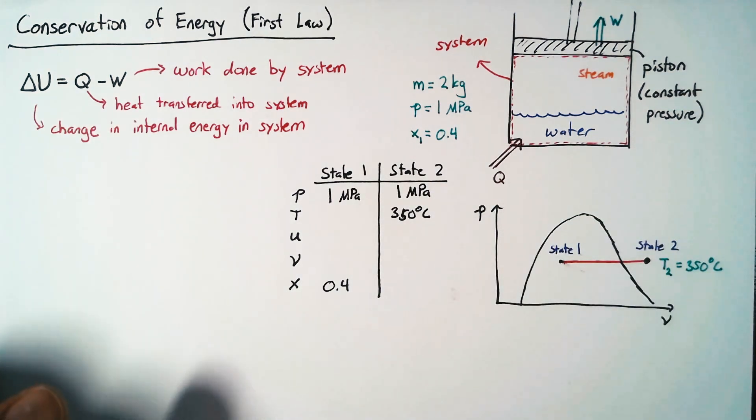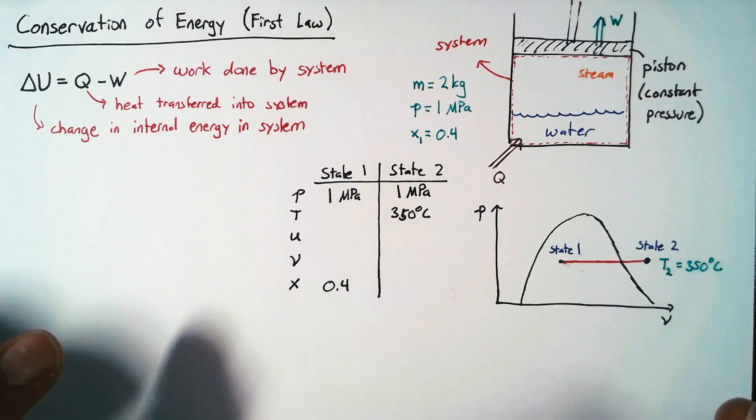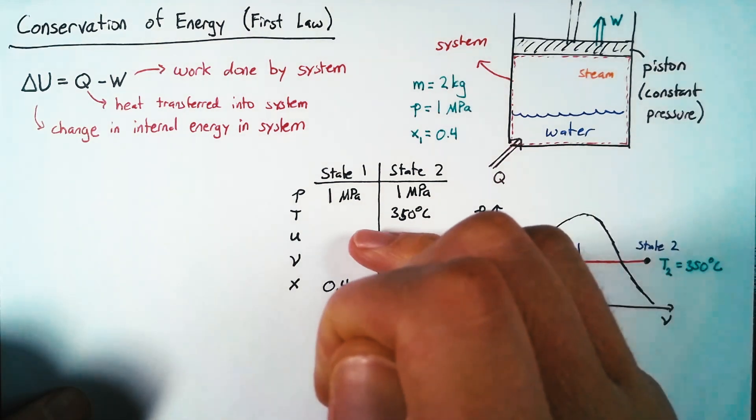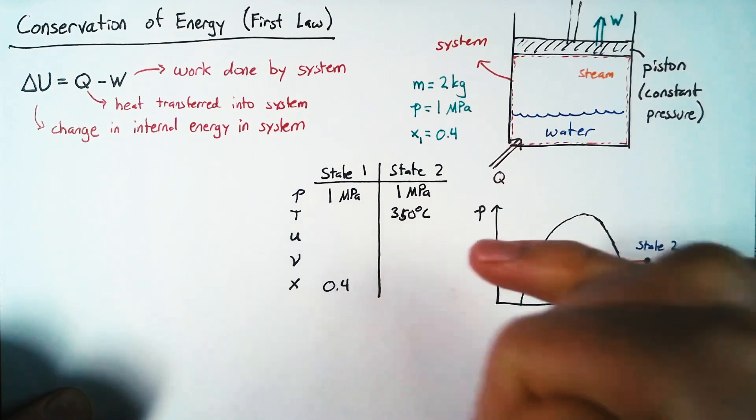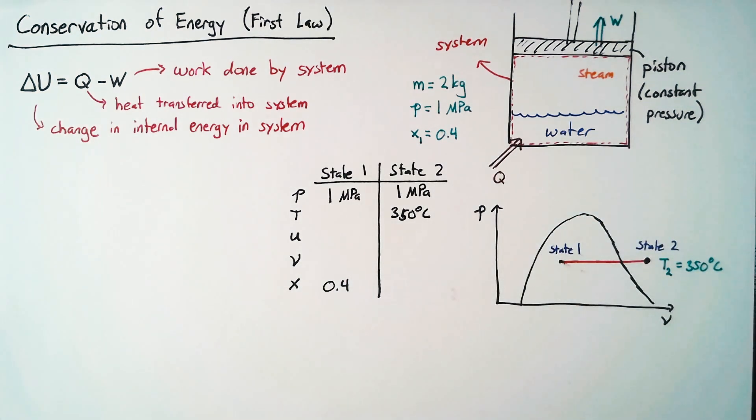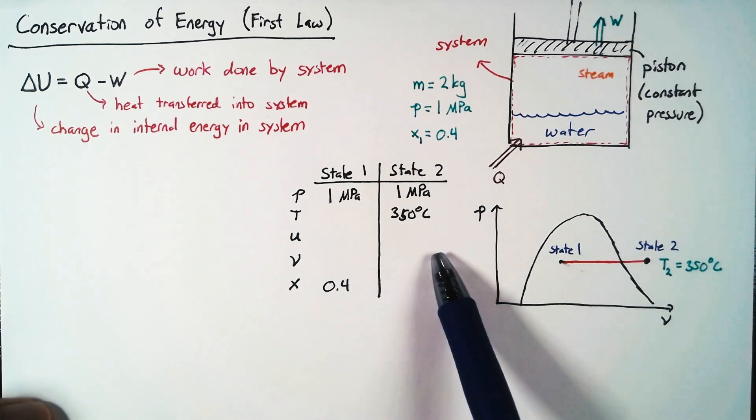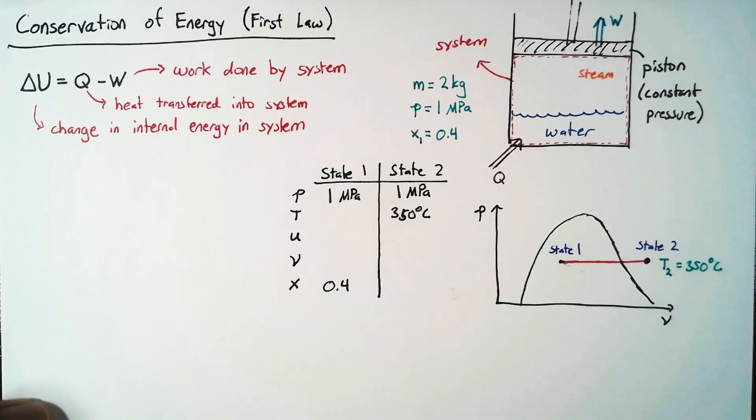Now, at this point, we should try to go to the tables in order to figure out these other two values, U and V, for both states. Let's look at state 2 first, because it's actually relatively easy to get those numbers.